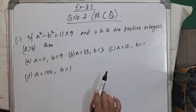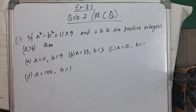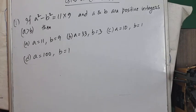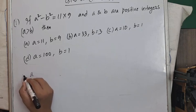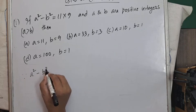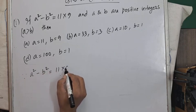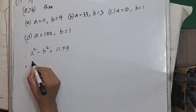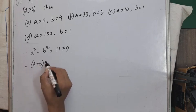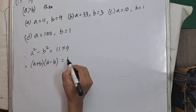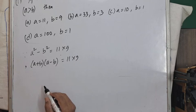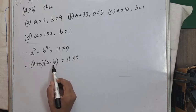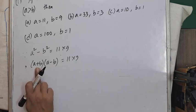The condition given is a² - b² = 11 × 9. We apply the formula: a² - b² = (a+b)(a-b), so (a+b)(a-b) = 11 × 9.